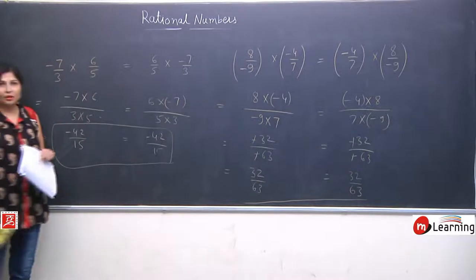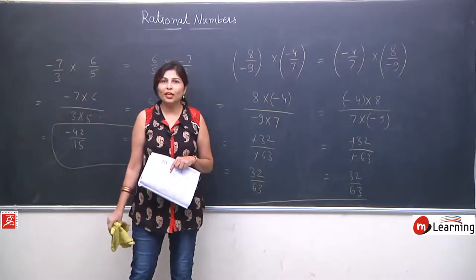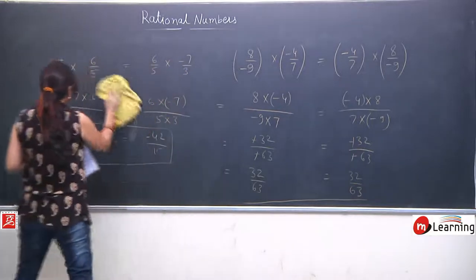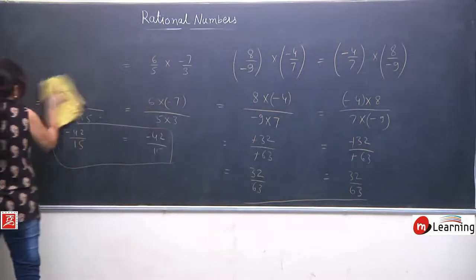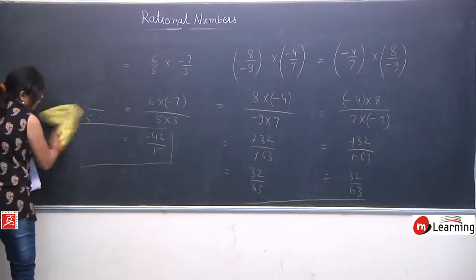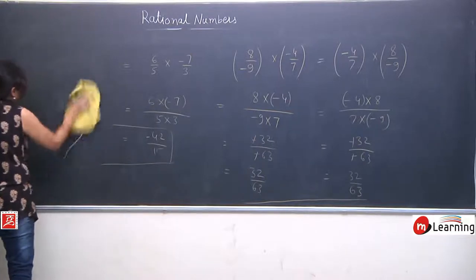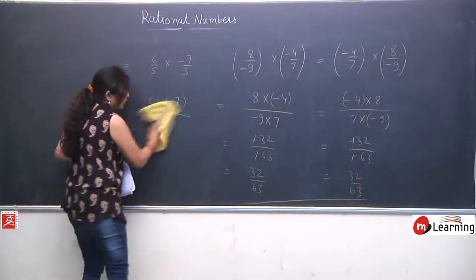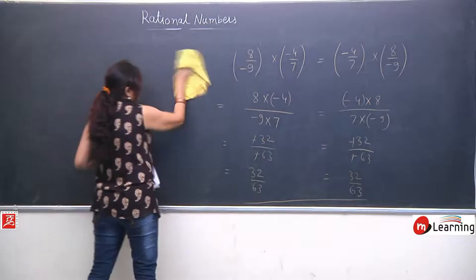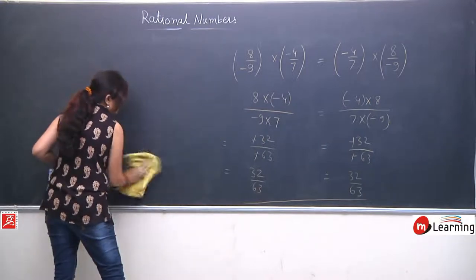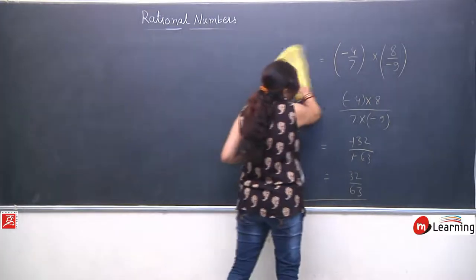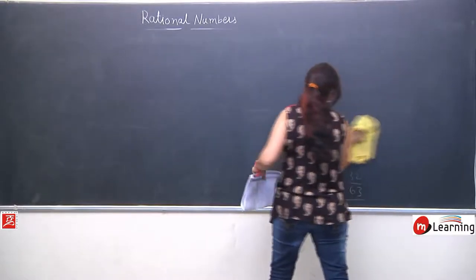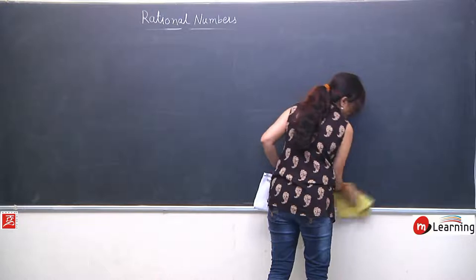Now, the fourth operation in mathematics — it is very-very important — divide. Ab hum divide ke liye bhi check karenge. Jab humne plus ke liye check kiya, minus ke liye check kiya, multiplication ke liye check kiya, then we need to check for divide also. Divide commutative law ko follow nahi karta — isme LHS equal to RHS nahi aayega.